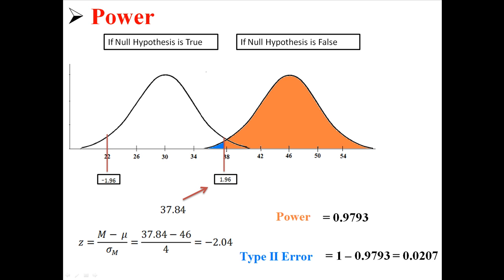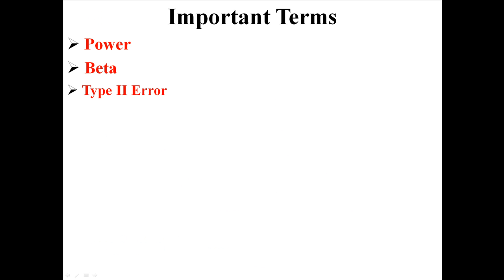So there, our power, our 98%, means there's a 98% chance that we will correctly reject the null hypothesis, meaning we will reject the null hypothesis when we're supposed to reject it. And the type 2 error is the chance that we will not reject the null hypothesis when we actually should be rejecting it. So that is power, and that is the type 2 error, which is also called beta.